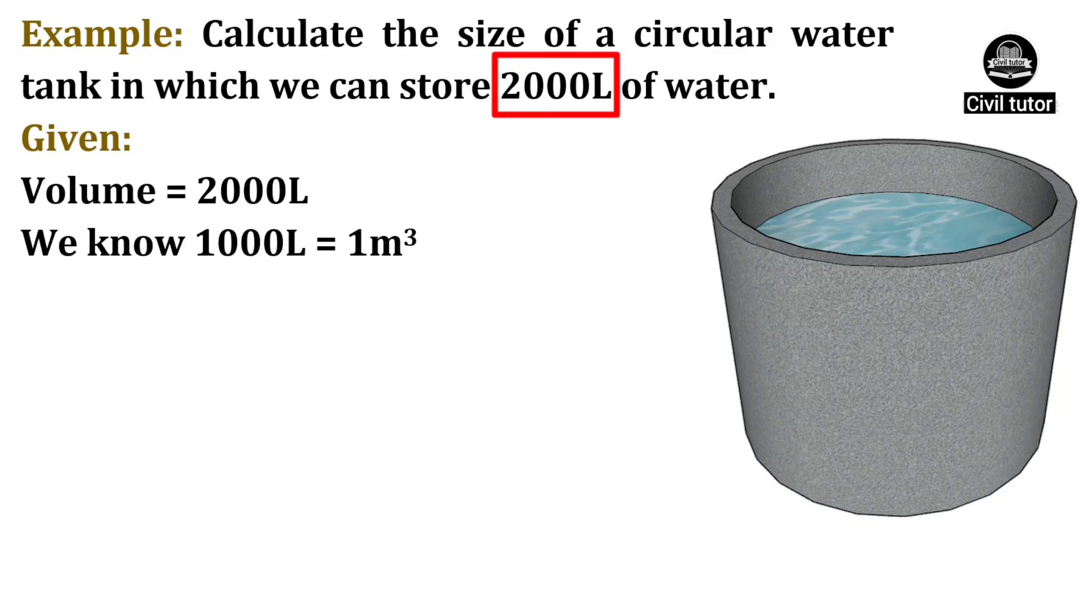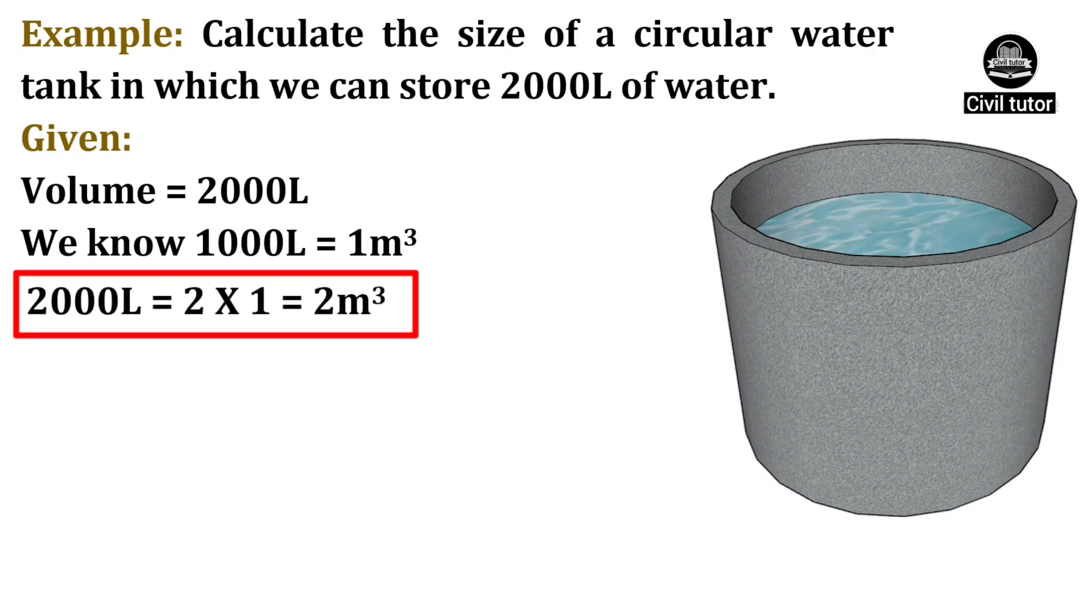So, we have the given data. Volume of tank is 2000 liters. As we know, 1000 liter is equal to 1 meter cube, which means 2000 liters will be equal to 2 meter cube.